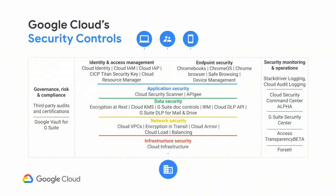Our philosophy of defense in depth transcends our own sphere of influence, and we would like to give customers that same ability. Customers care about network security, data security, application security, identity and access management, endpoints, and monitoring and operations. And then, wrapping it all together in a governance, risk, and compliance framework. The way I think about the left column of governance, risk, and compliance is basically good documentation and policies around everything else on the slide. If you don't have good data security, for example, your compliance is going to be hard.